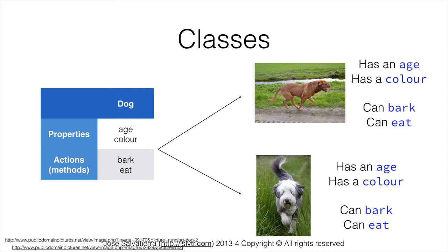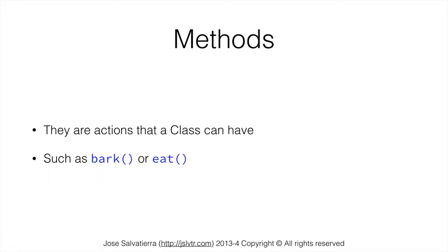Here we have two examples of dog — one dog at the top and one at the bottom. They both have an age and a color, although they are different properties. But both of them can bark and eat in pretty much the same way. They're still going to eat and bark in pretty much the same way, although they might make slightly different noises. So the methods are the actions that a class can have — the actions an object can do, such as bark or eat.